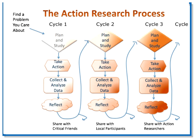Action research involves a cycle: you find a problem that you care about, you plan and study, you take action, you collect and analyze data, and then you reflect on that data and share it with critical friends. Then you plan and study again — think about how to do the next improvement on that solution. Again take action, collect data, reflect. You might share it with more people, share it with local participants. You try again, take action, analyze the data, reflect, and share this time with action researchers so that you are externalizing your knowledge so that other people can take advantage of it.